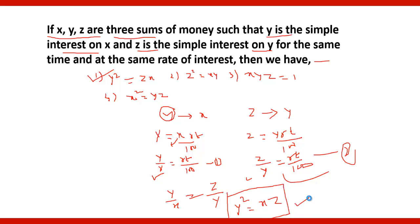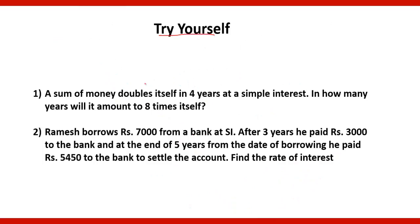Now friends, it's your time. Try yourself the following 2 questions. A sum of money doubles itself in 4 years at simple interest. In how many years will it amount to 8 times itself? Second question: Ramesh borrows Rs. 7000 from a bank at simple interest. After 3 years he paid Rs. 3000 to the bank. And at the end of 5 years from the date of borrowing, he paid Rs. 5450 to the bank to settle the amount. Find the rate of interest. Solve it and give your answer through the comments, and of course the method you used to come to the answer.